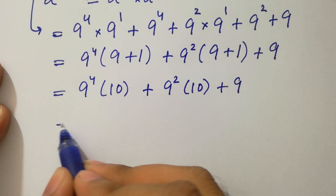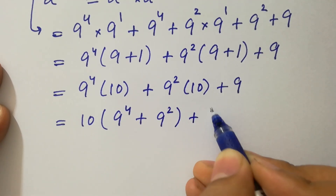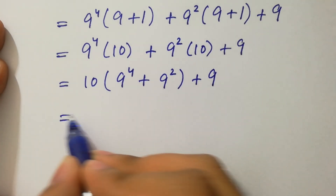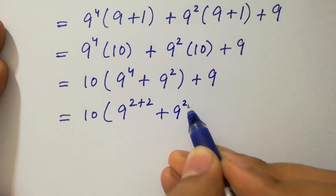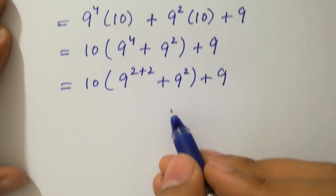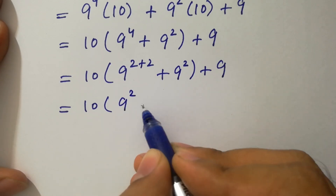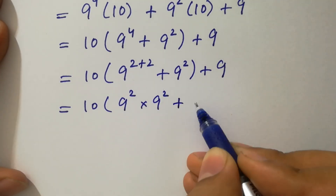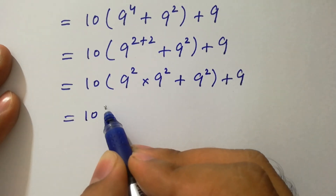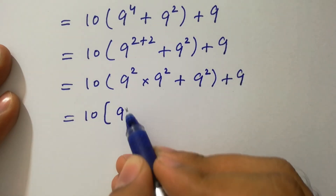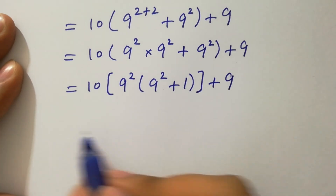Here, 10 can be common. We have 10 times 9 to the power 4 plus 9 squared plus 9 as it is. Then 10 times 9 to the power 4, giving us 10 times (9 to the power 4 plus 9 to the power 5). Next, we simplify further.